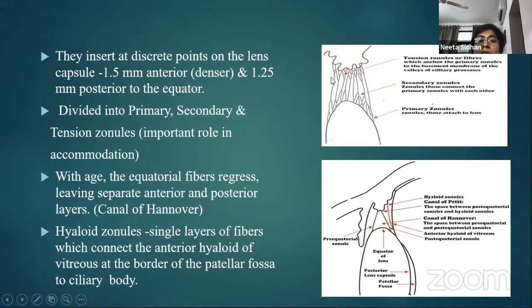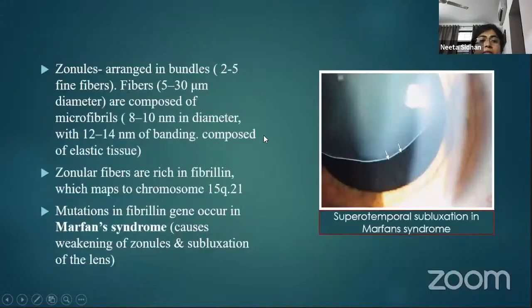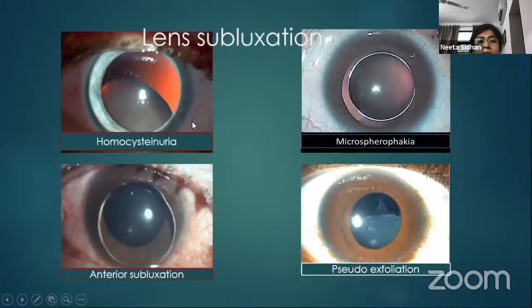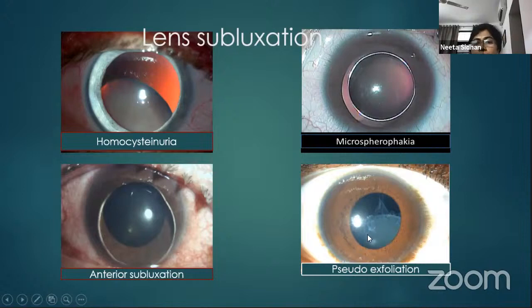The zonules are arranged in bundles of two to five fibers, which are composed of microfibrils rich in fibrillin. Mutations in the fibrillin gene occur in Marfan syndrome, which typically causes supratemporal subluxation of the lens. In homocystinuria, there is inferior subluxation of the lens with disintegration of the zonules. Microspherophakia presents as a small globular lens well seen in the dilated state, predisposing to pupil block glaucoma. Pseudoexfoliation is associated with degenerated zonules, and an anterior subluxated clear lens shows the oil droplet appearance.